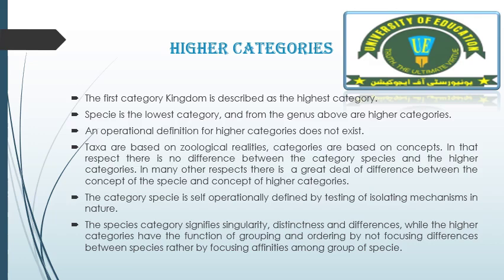The category species is operationally defined by testing of isolating mechanisms in nature. In species, organisms are reproductively isolated — they can interact with other members of the species and produce fertile offspring. The species category signifies singularity, distinctness, and differences, because it has only one population. Higher categories, on the other hand, have the function of grouping and ordering by focusing on affinities within groups of species rather than differences between species.